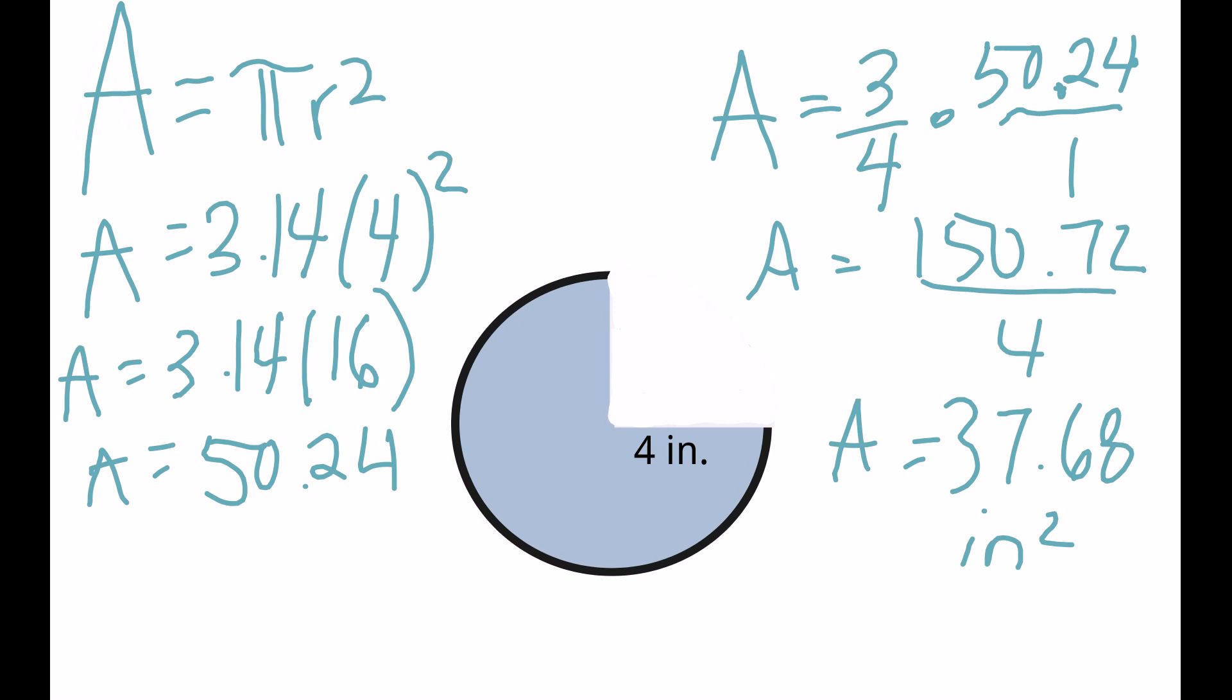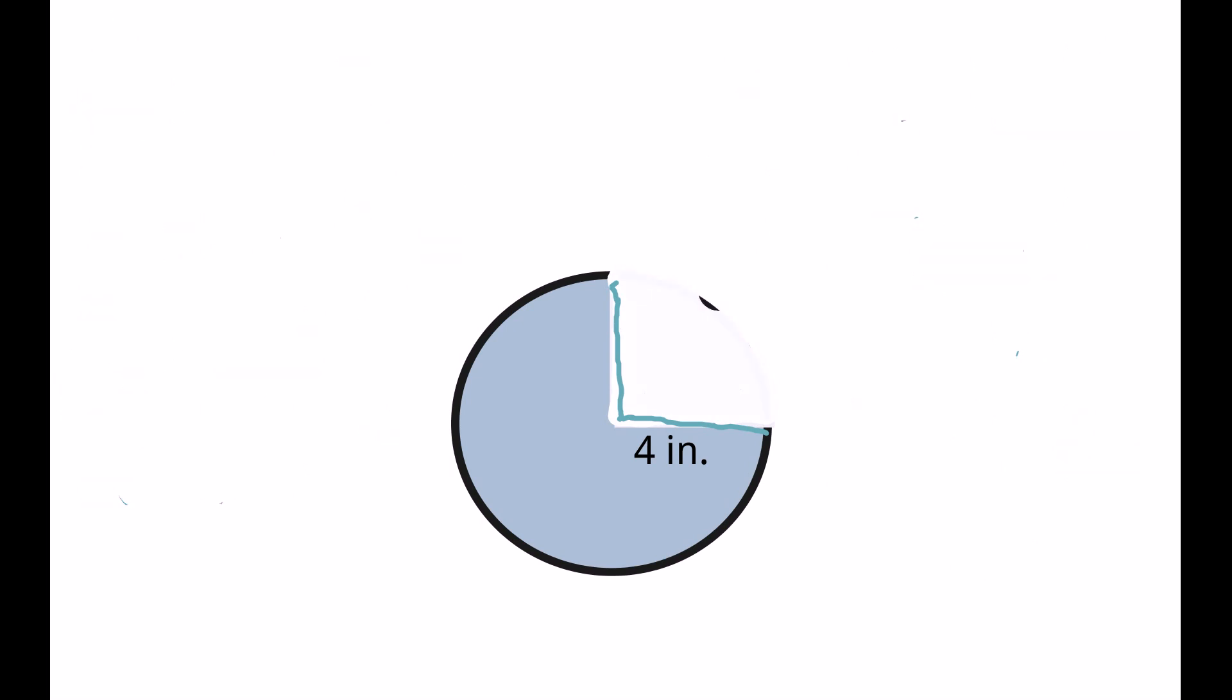Okay, let's go ahead and do the perimeter of the shape. Normally we would call it a circumference, but in this case we have a little bit of perimeter that comes outside of the circle. These two edges here are now going to be part of our perimeter. So let's go ahead and do that part. Moving on to the perimeter.